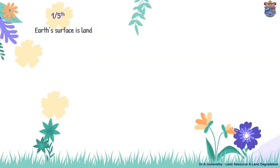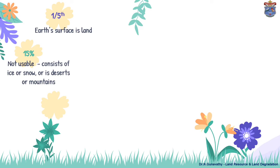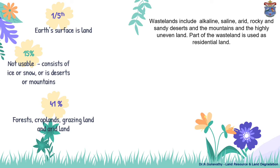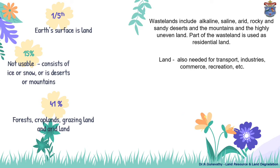Nearly one-fifth of the Earth's surface is land. 15% is not usable because it consists of ice or snow, or it is desert or mountains. 41% consists of forests, croplands, grazing land, and arid lands. Waste lands include alkaline, saline, arid, rocky, and sandy deserts, mountains, and highly uneven land.